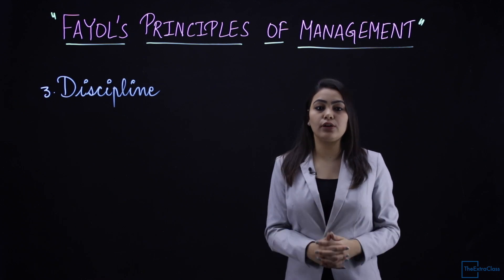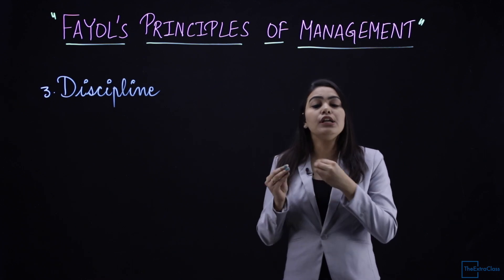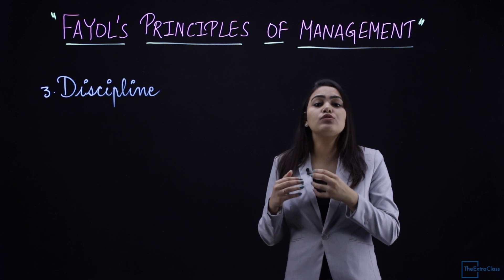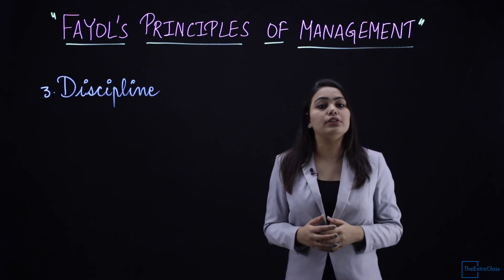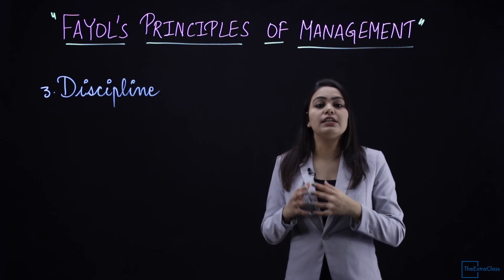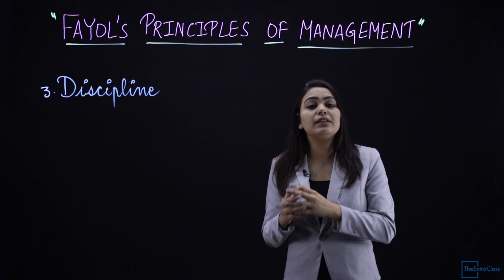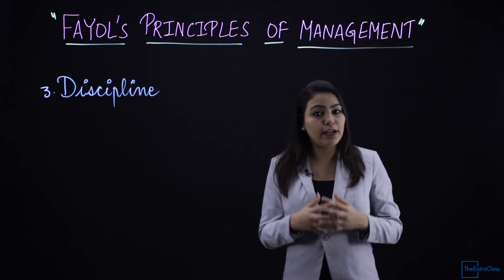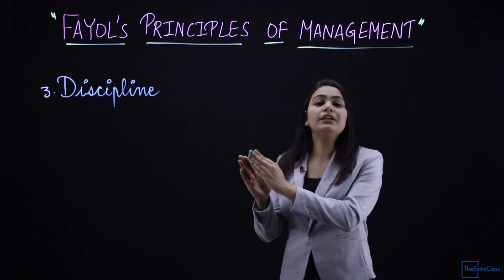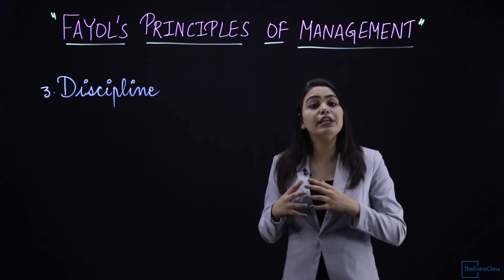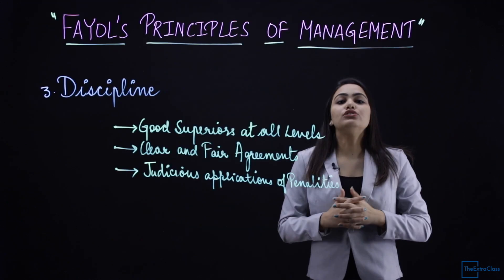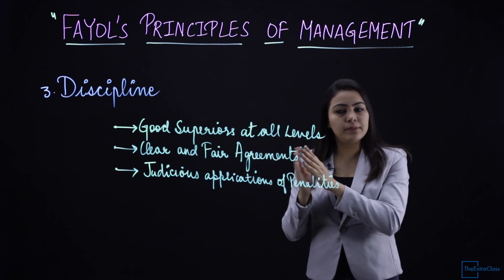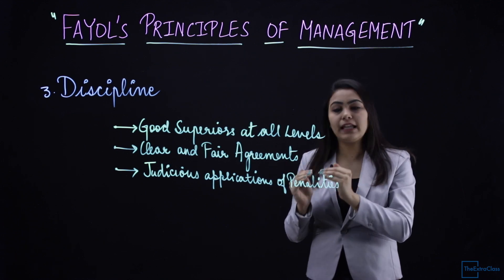In an organization or company, there are rules and regulations that every individual employee and employer must follow. An individual is recruited based on their capability and knowledge, and they are given authority and responsibility accordingly — they must use that authority by following the company's rules and regulations. Henry Fayol says that to achieve discipline, basically three things are required.